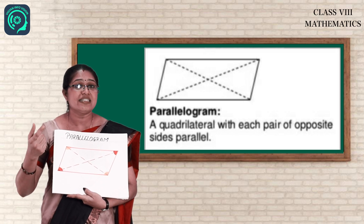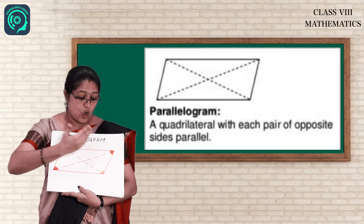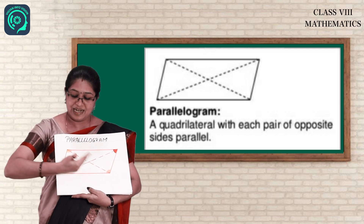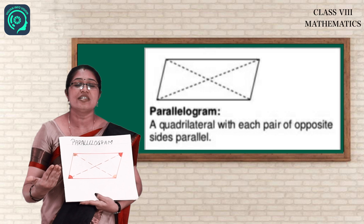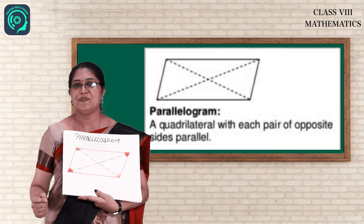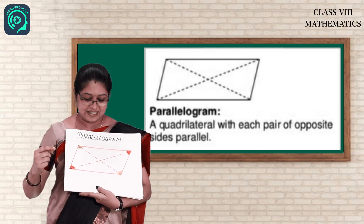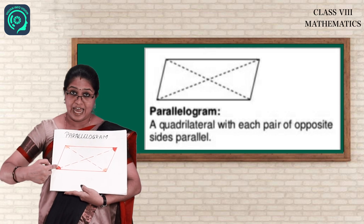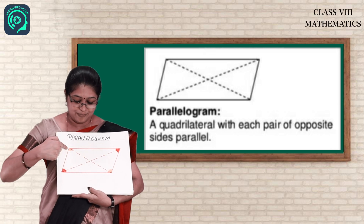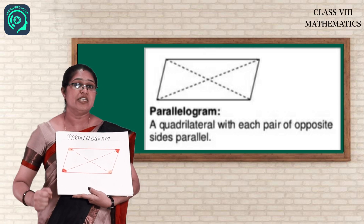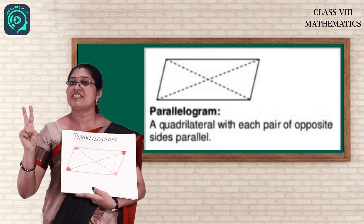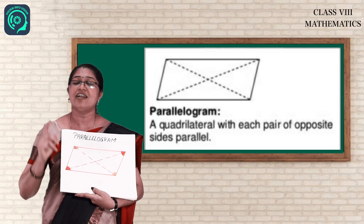From the name itself you can understand 'parallel' — opposite sides are parallel. These sides are parallel and these sides are parallel. That is, opposite sides are parallel and also opposite sides are equal. Now about the angles — opposite angles are equal. I have marked them in red. Both opposite angles are equal.